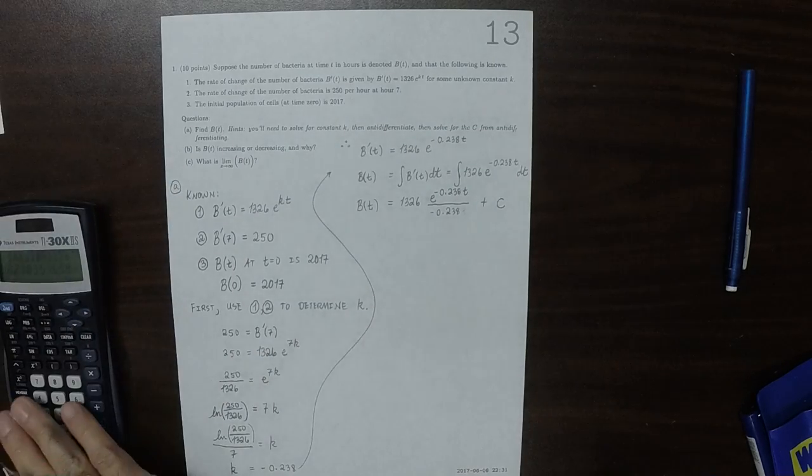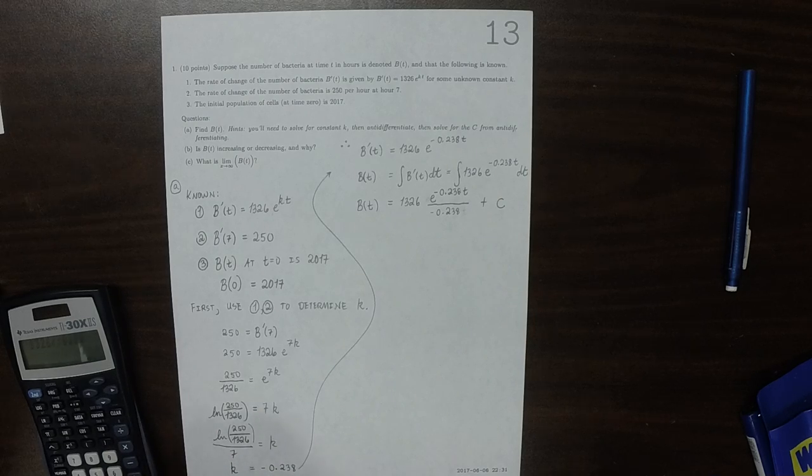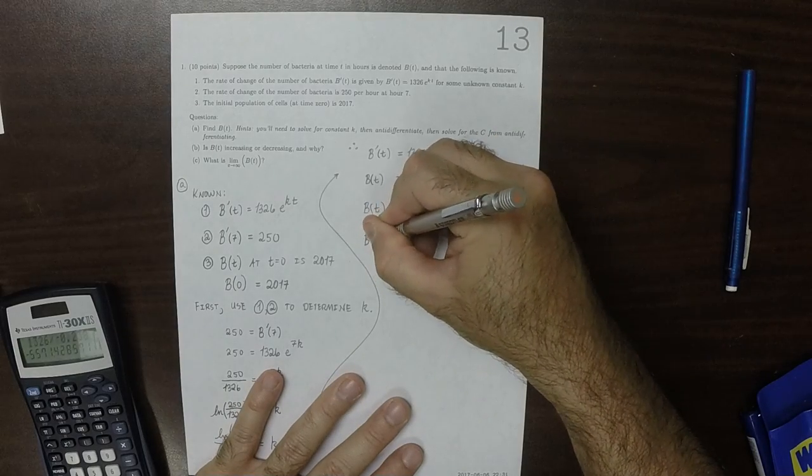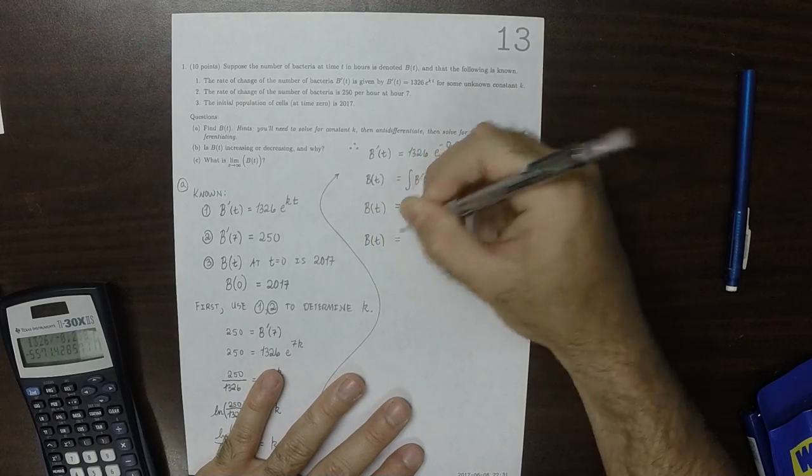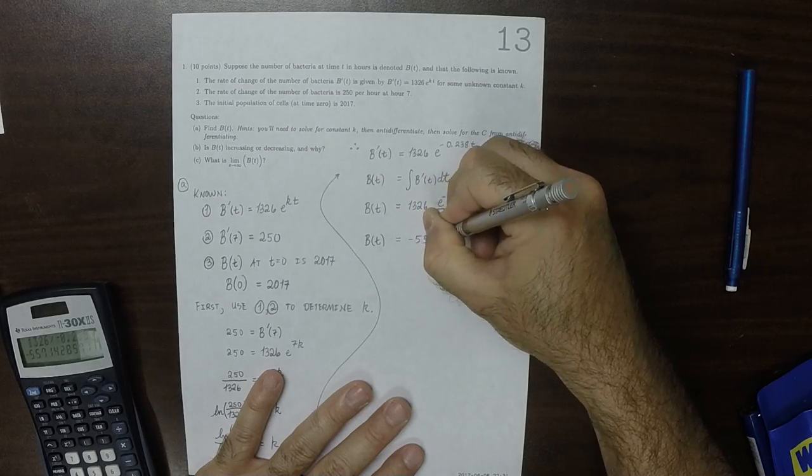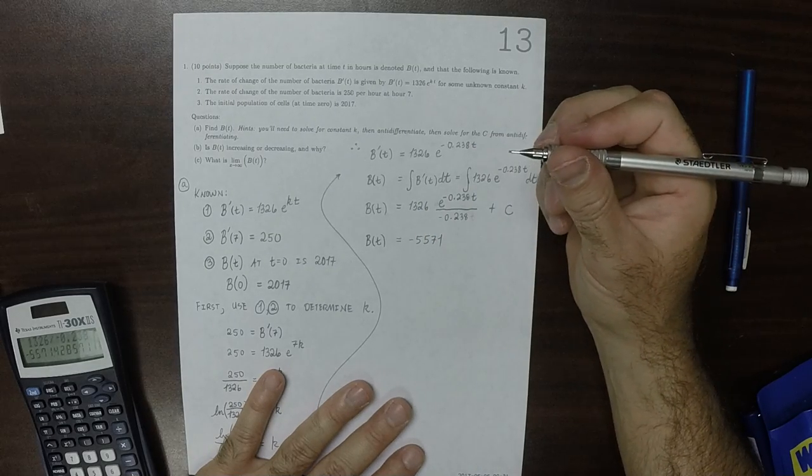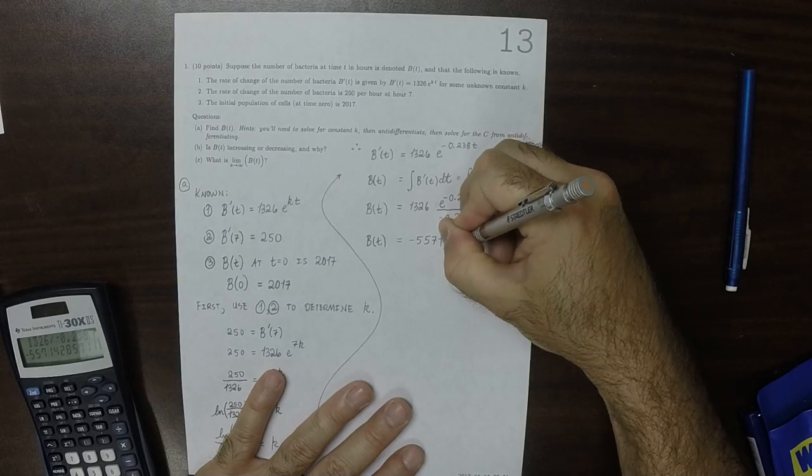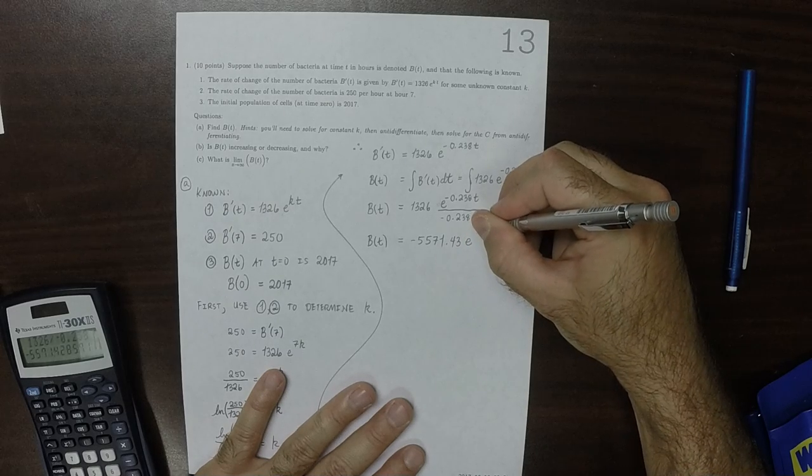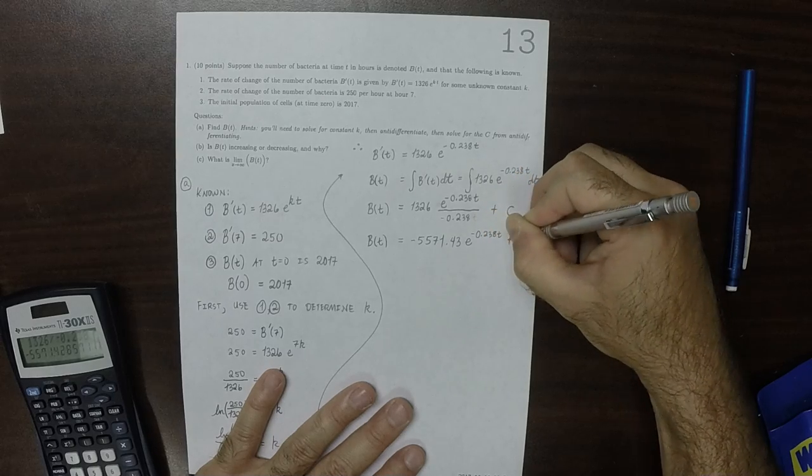So we could simplify that a little bit. 1,326 divided by negative 0.238, that would be B(t) is negative 5,571.43 exponential negative 0.238 t plus an unknown constant.